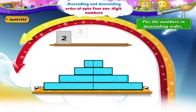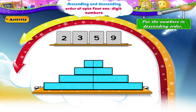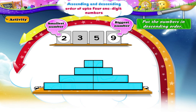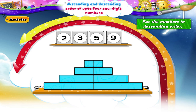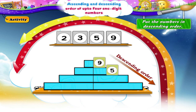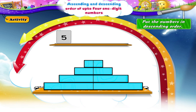Two, three, five, nine. The biggest number is nine. The smallest number is two. Between three and five, five is the bigger number. The numbers arranged in descending order are nine, five, three, two.